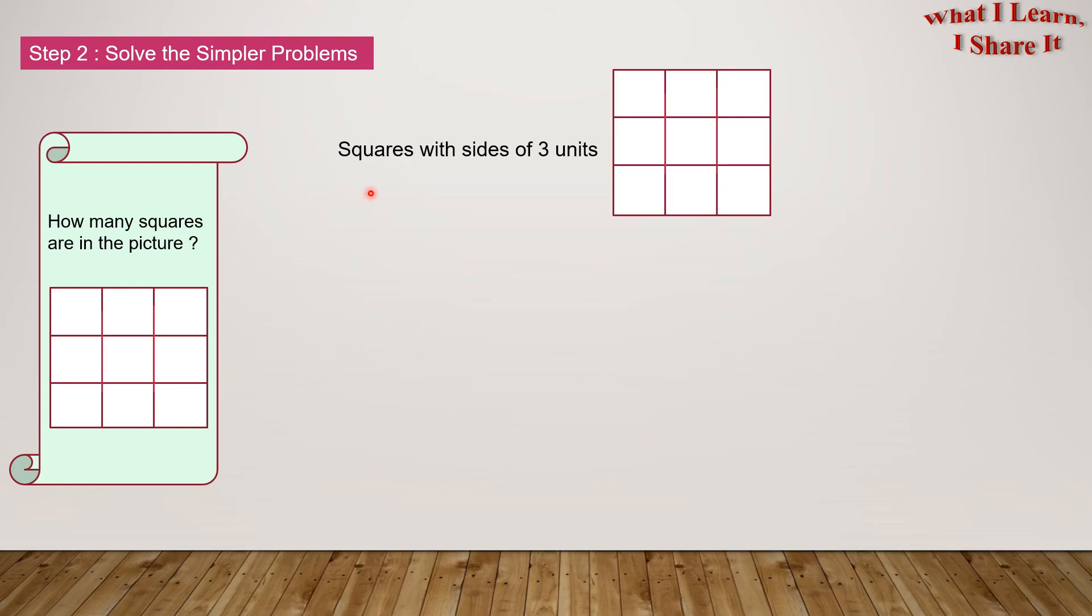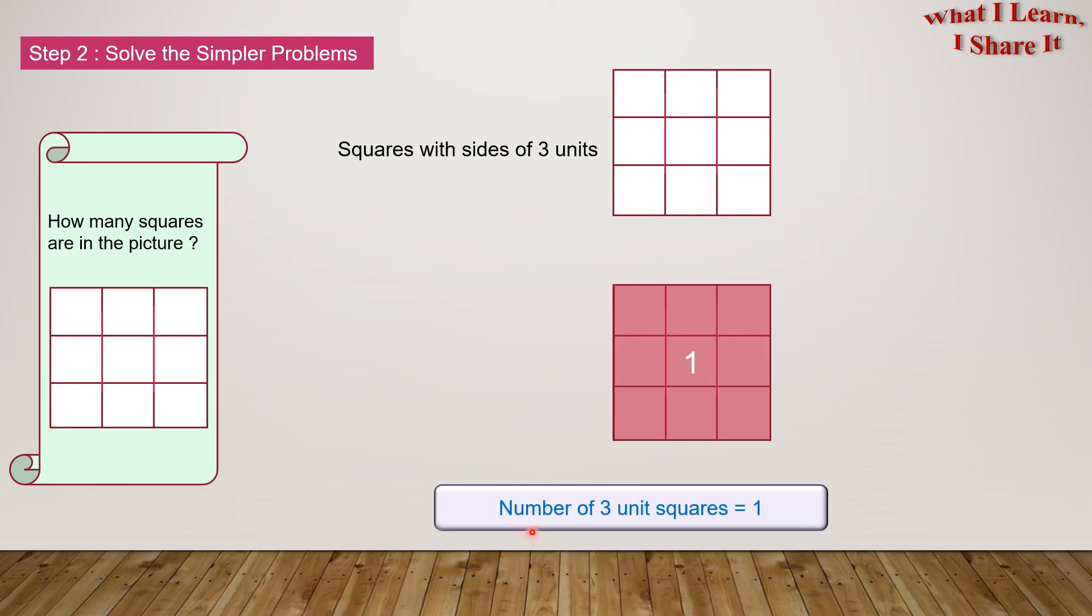Now we'll be doing squares with the size of 3 units. And here is our model. There is 1 square with the size of 3 units. Number of 3 unit squares equals 1.